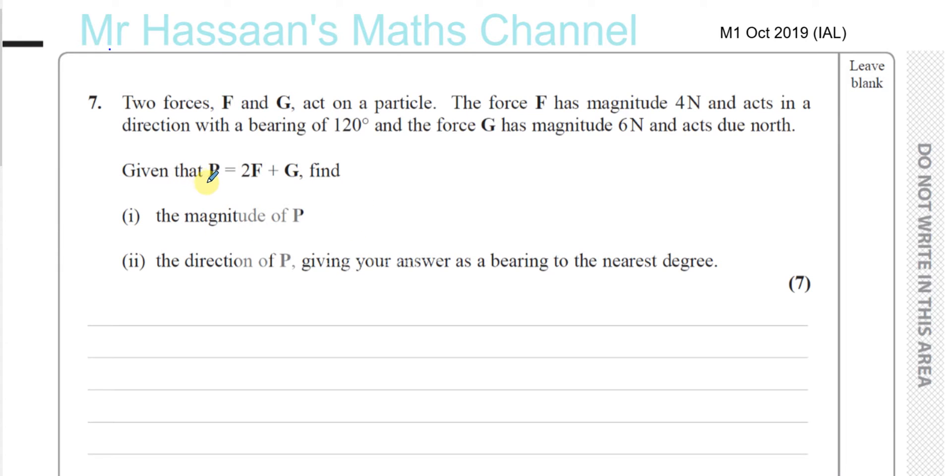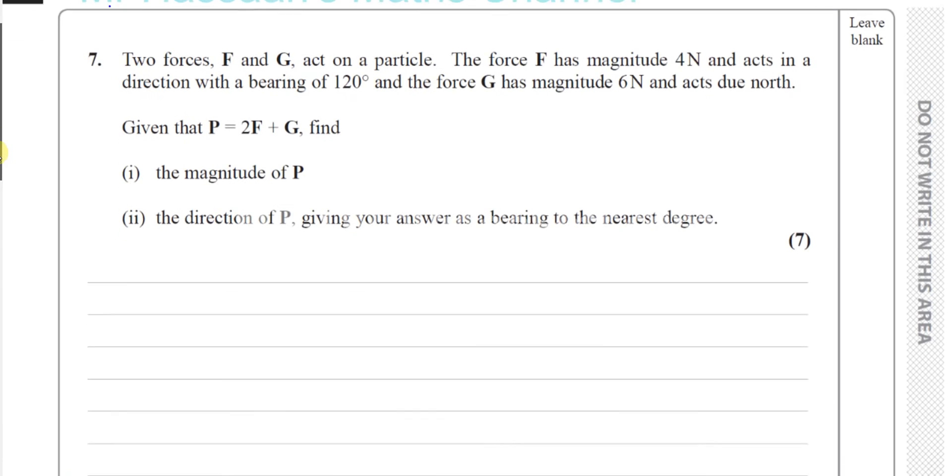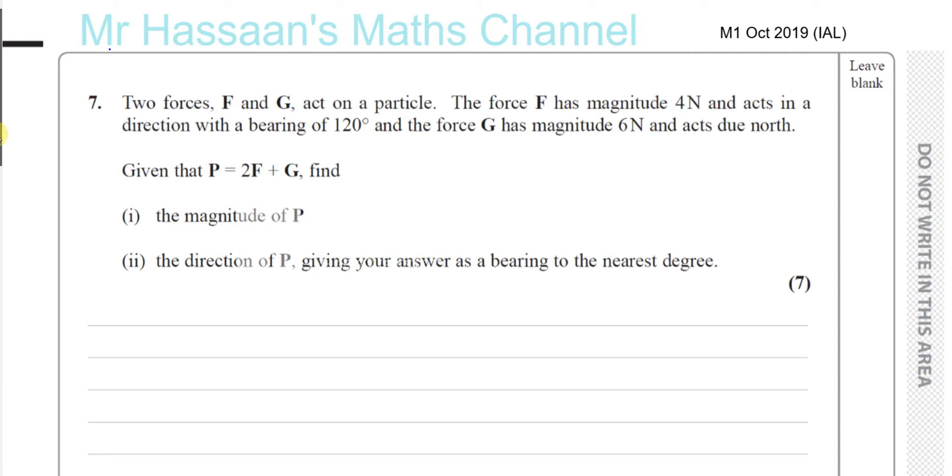Okay, so P is the resultant force when you have 2F, the force 2F plus G added together. Now the force F, they've told us here, the force F is acting on the bearing of 120 degrees.